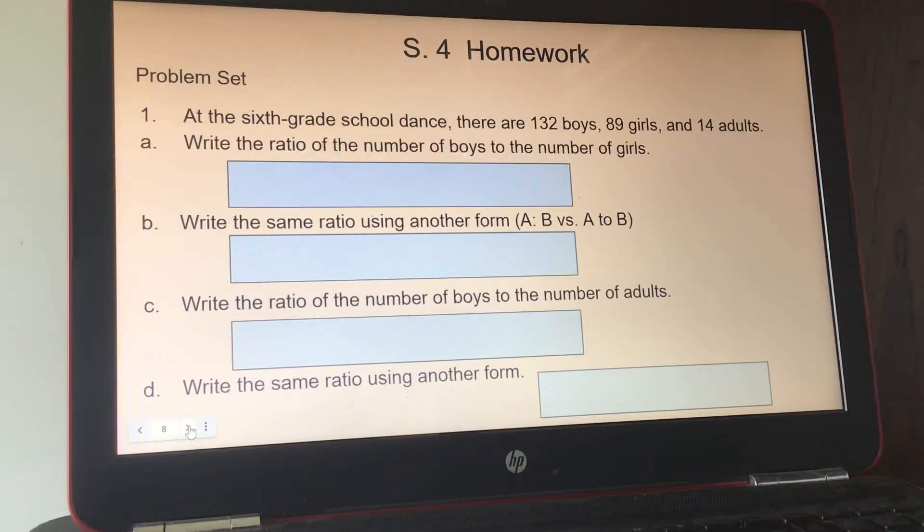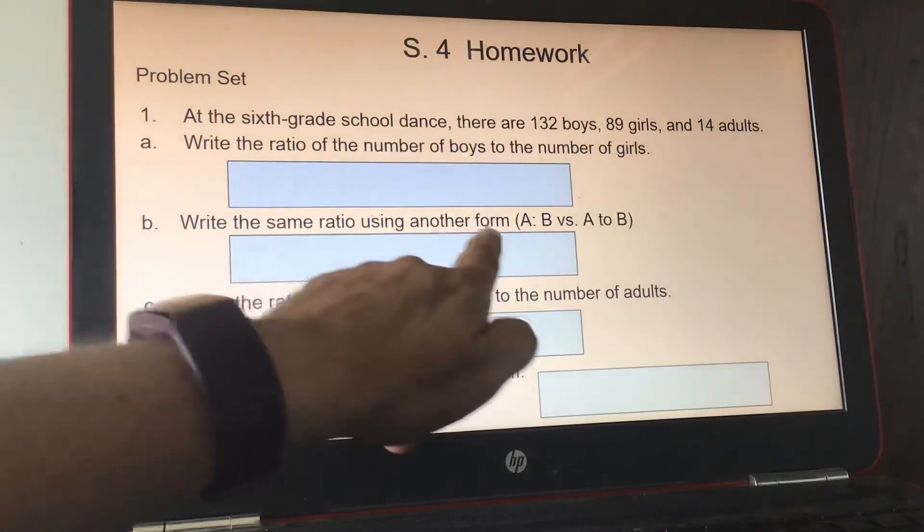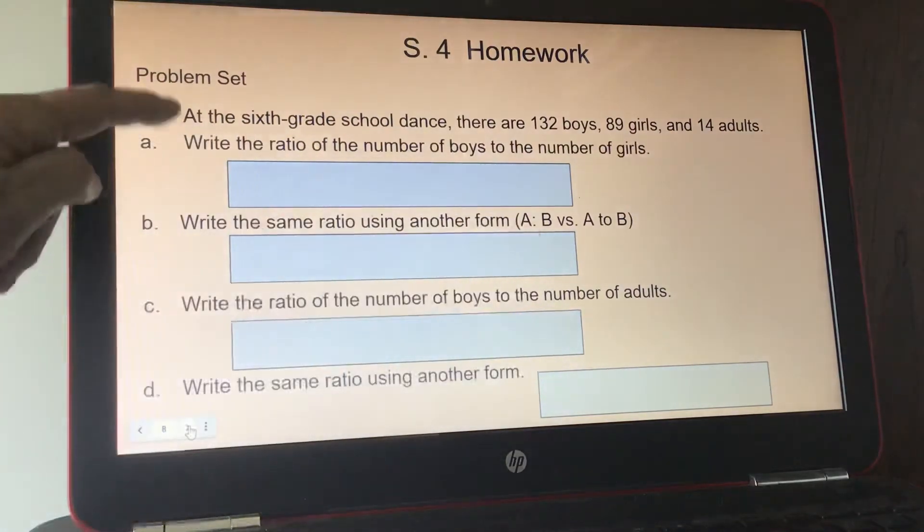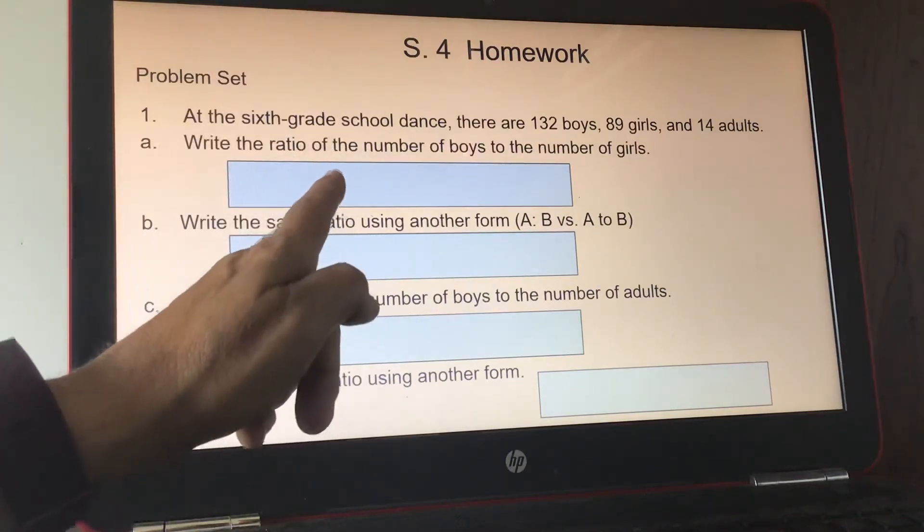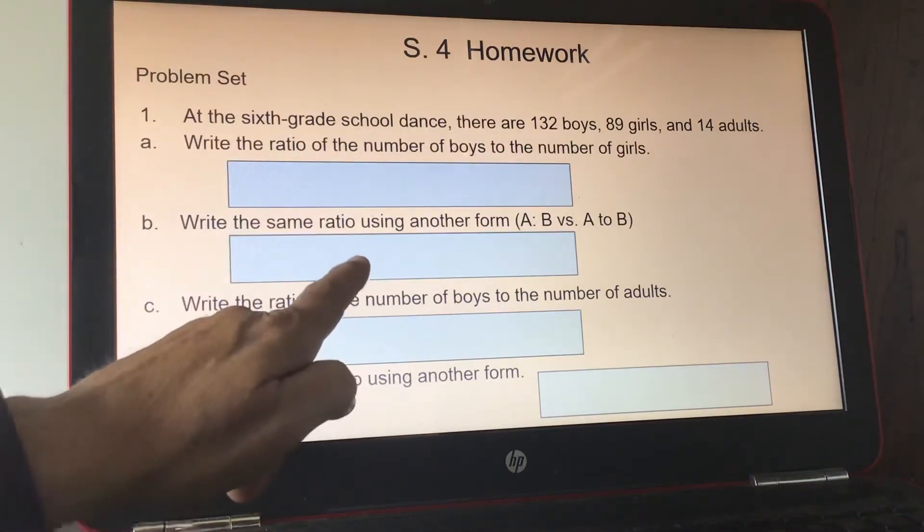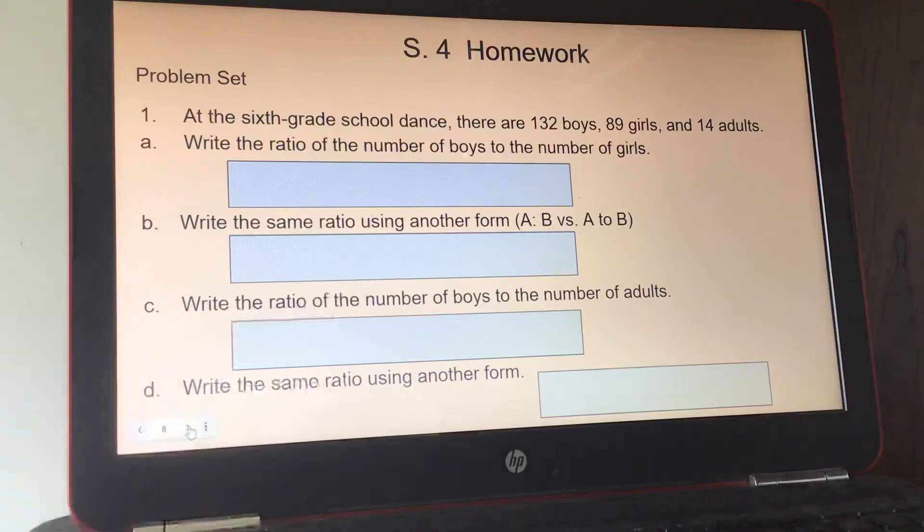and then put the number of girls. Or you could write it, the number of boys and the word 2, T-O, and 89 girls. So go ahead and do the rest of this. This tells you to write the same ratio using another form for A. So in other words, if you use the colon for this one, then use the word 2 in between for this one. And you're going to do the same for C and D.